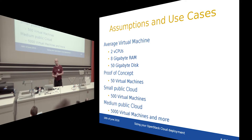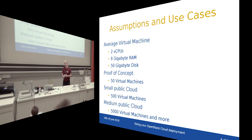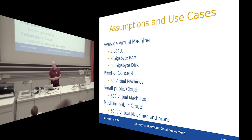I'll look into three different use cases. The first is a proof of concept for testing and development with around 50 virtual machines. Then a private cloud or small public cloud with up to 500 virtual machines. And finally, a large private cloud or small-to-medium public cloud with up to 5,000 machines.